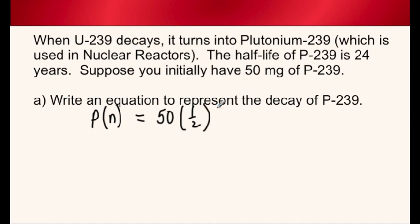And then our exponent is the number of years over 24, because it takes 24 years before we multiply by a half, before reducing by a half. And that's the equation for this one.